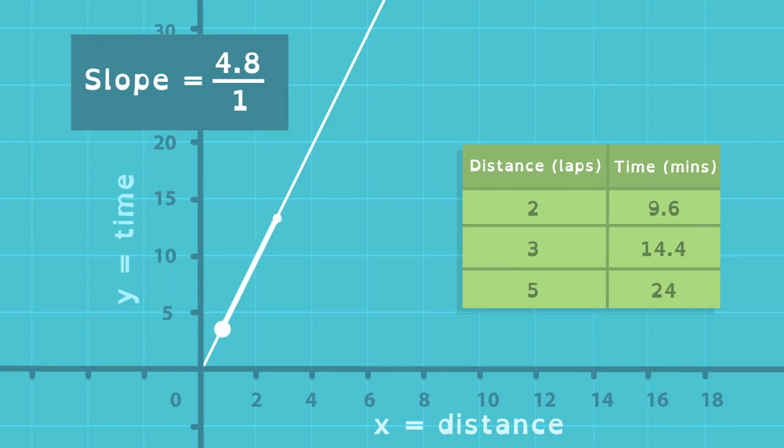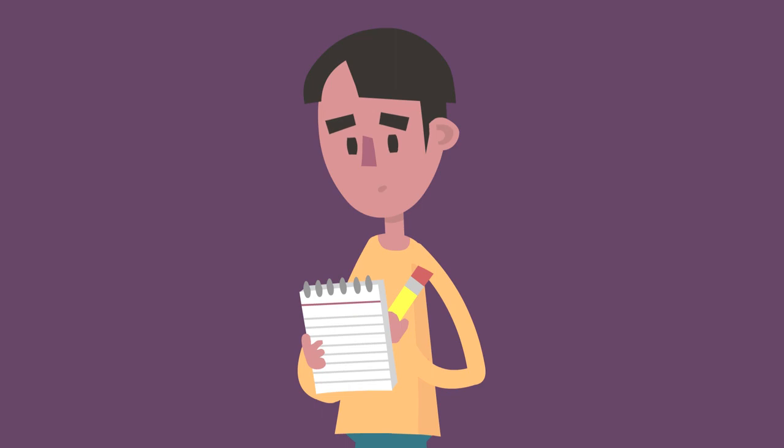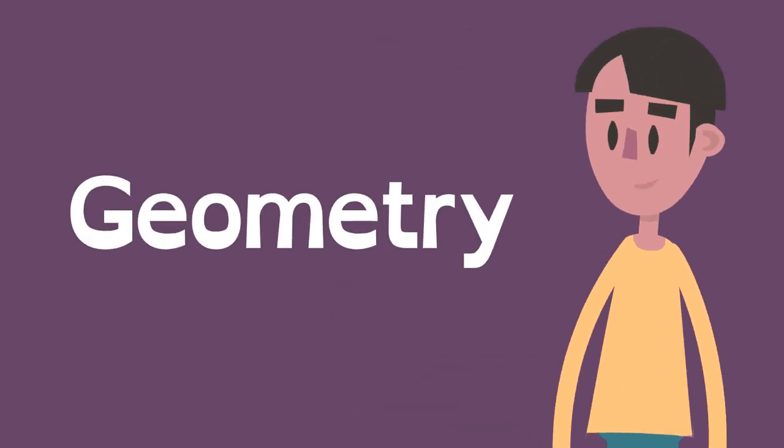Any two points on this line will have the same slope. Can Jason prove this without a lot of calculations? Geometry offers a way.